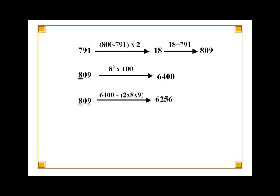The last step which is the simplest requires us to square the rightmost digit 9. Now write the square of 9 which is 81 next to 6256 obtained above to get 625681. This is the square of 791.